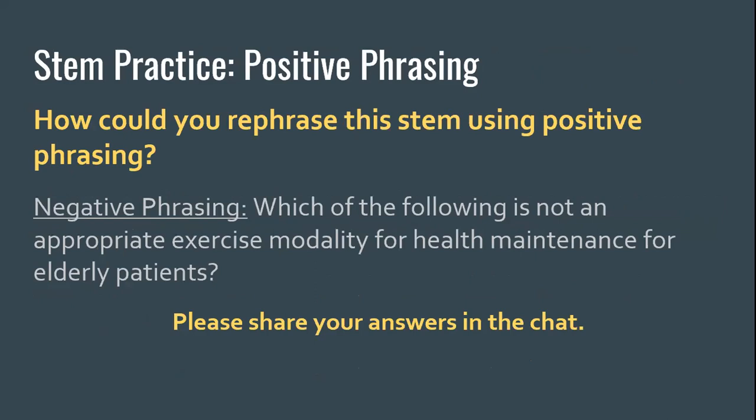One more practice for positive phrasing. How could you rephrase this stem using positive phrasing? The negative phrasing is: 'Which of the following is not an appropriate exercise modality for health maintenance for elderly patients?' Alyssa's verbal answer: simply take the 'not' out — 'Which of the following is an appropriate exercise modality for health maintenance for elderly patients?' That's the simplest fix and the lowest burden when designing items.